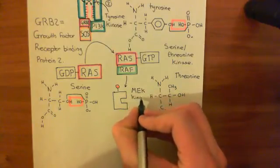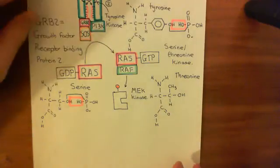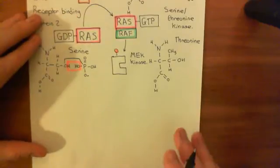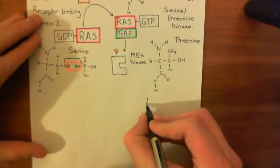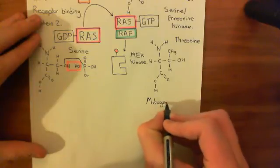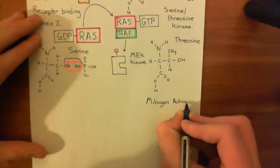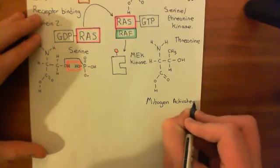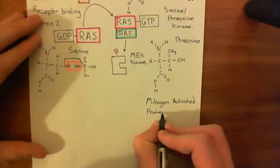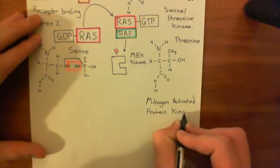MEK kinase has a bunch of other names. Its full name is the mitogen-activated protein kinase kinase — mitogen-activated protein kinase kinase — that is the full name for MEK kinase.